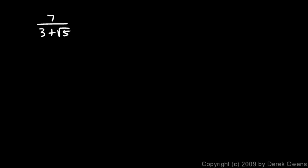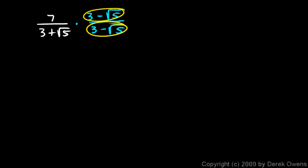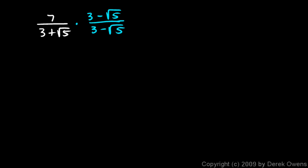So the question is, how do I simplify something like this? The answer is: I use conjugates. I look at the denominator and multiply by a fraction made from the conjugate of that denominator — 3 minus the square root of 5 over 3 minus the square root of 5. This fraction equals 1, since anything over itself equals 1, so I haven't changed the value. Multiplying across the top: 7 times all of that gives me, distributing the 7, 21 minus 7 root 5 in the numerator.